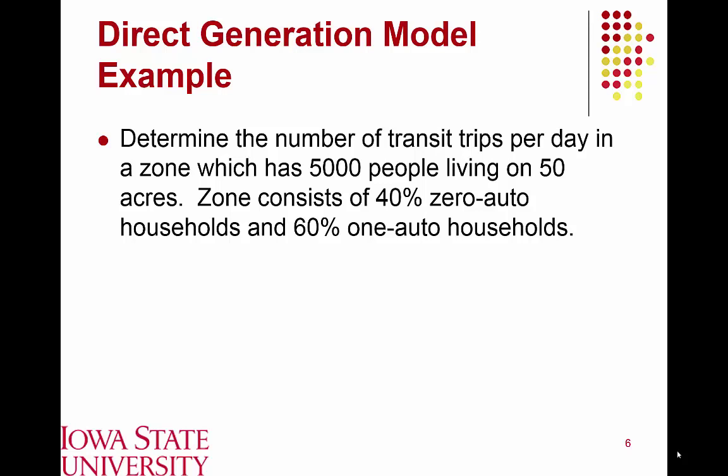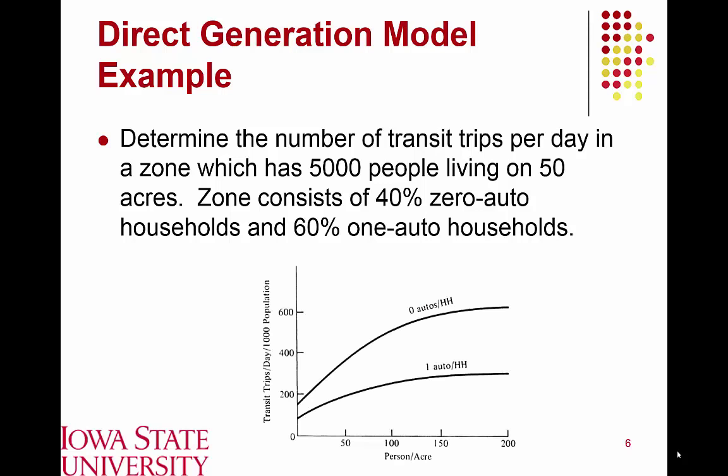As a quick example: let's say we have a zone generating trips where we have 5,000 people living across 50 acres, and within this zone 40% of households have no automobiles and 60% have one automobile — suggesting this is more of an urbanized community. The direct generation model is based on a series of simple equations presented in graphical form, relating the number of transit trips per day as a percentage of the total population.